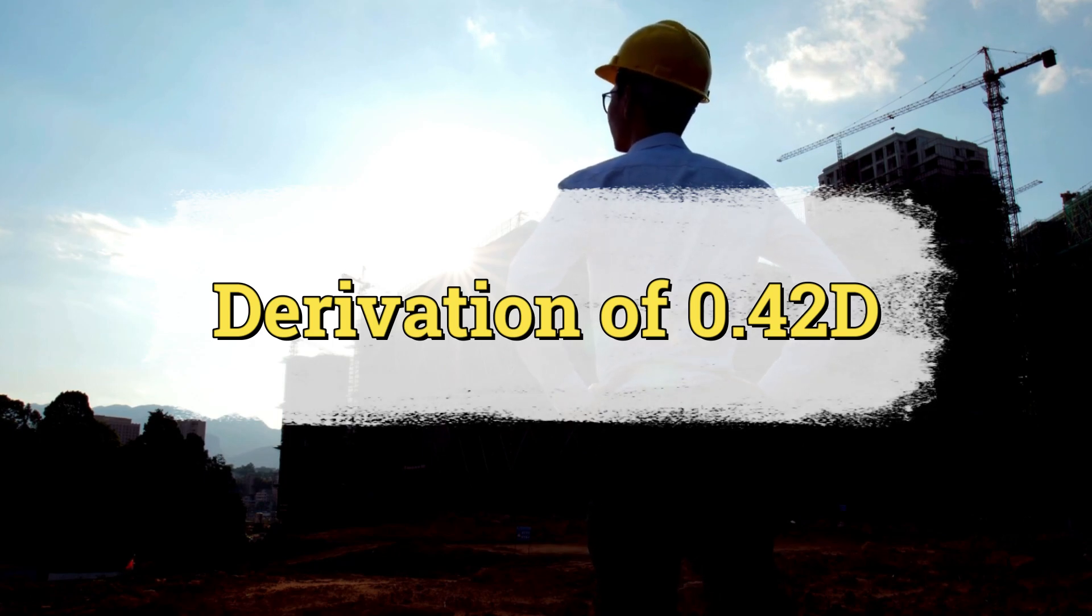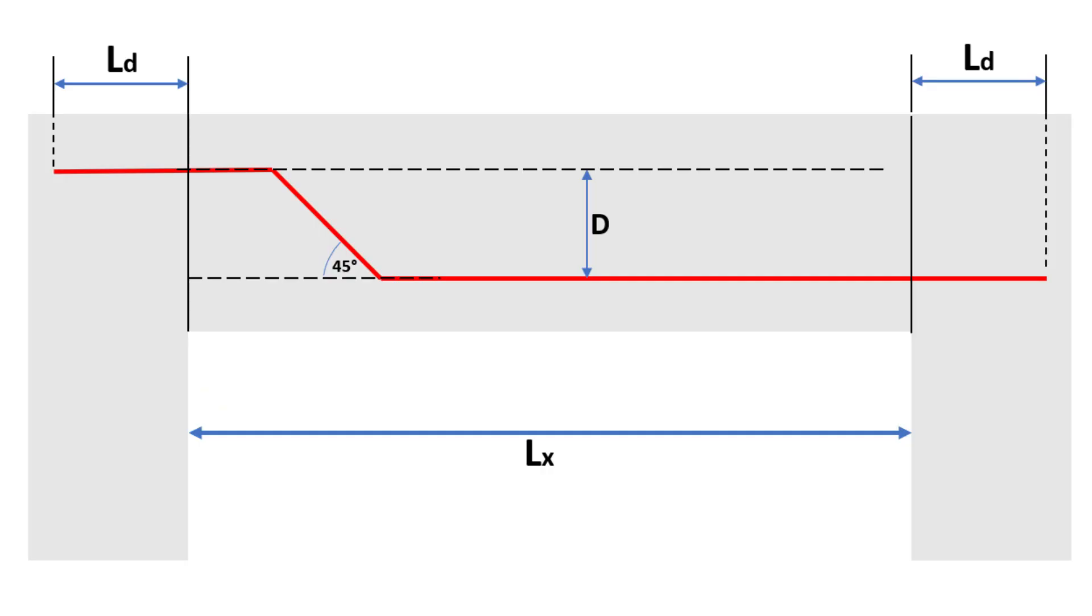For illustration, let's consider a cranked bar which is bent up at a single end only. We can draw a triangle ABC with sides AB, BC and AC as shown in the picture. The bent up part of the cranked bar will be the side AC.